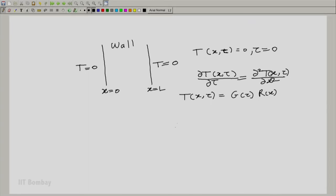After putting this equation and simplifying, we will get 1/g(τ) dg(τ)/dτ. Note that this is an exact differential here because g is only a function of τ the time, equal to 1/r(x) · d²r(x)/dx². Now, the left hand side of this equation is a function of time and the right hand side is a function of space.